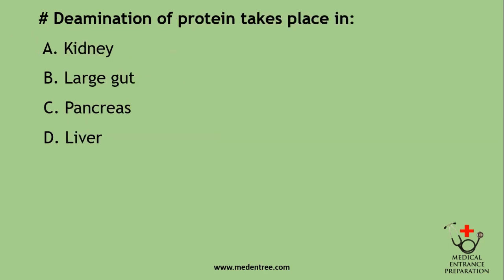Deamination of protein takes place in: kidney, large gut, pancreas, or liver? The correct answer is liver. Deamination of protein is a process that takes place in the liver.